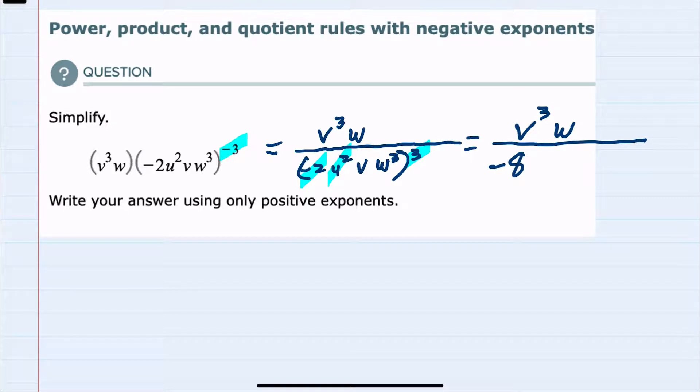The u squared, when we have a power on the inside and a power on the outside, we keep that base u and we multiply the powers. 2 times 3 is 6. Our v is a v to the 1 and again multiplying the powers inside and the powers outside, 1 times 3 is 3. And our w cubed, the power inside times the power outside, becomes a w to the 9.